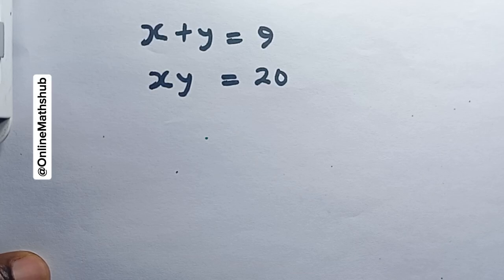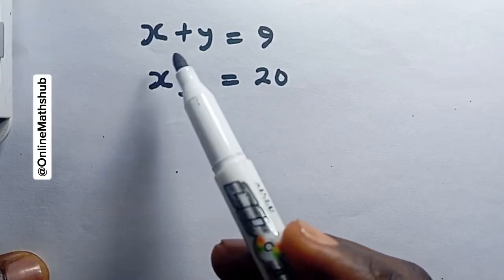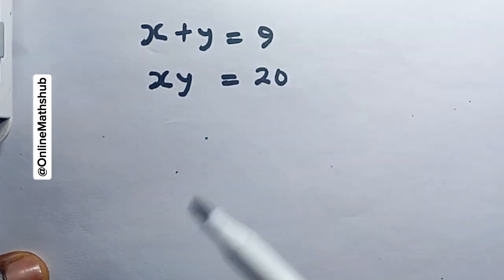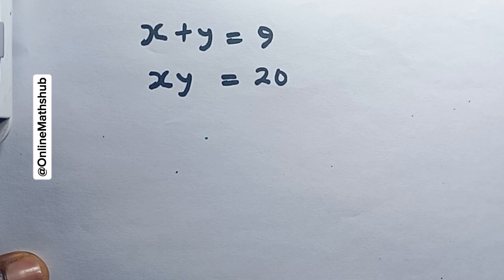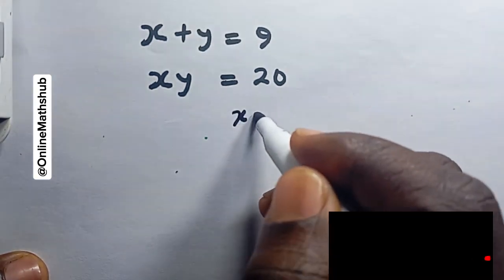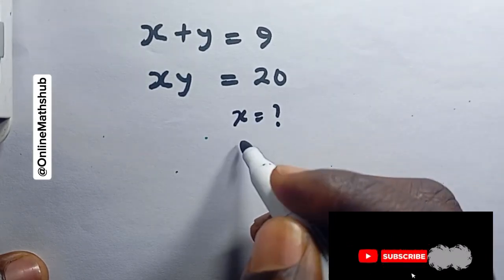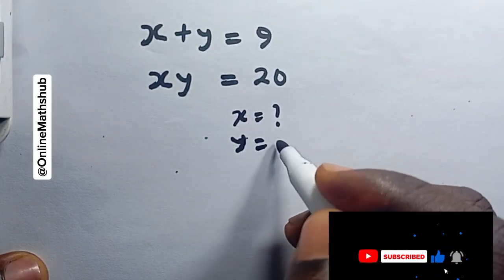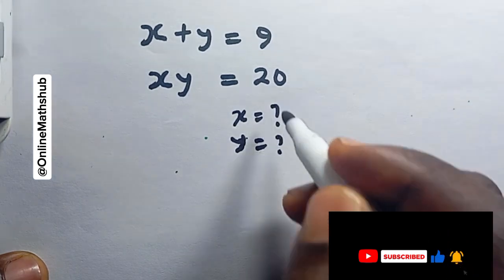Hello friends, welcome back to Online Mashup. We're going to be solving this question: x plus y is equal to 9, and x multiplied by y is equal to 20. We want to find out what values of x and y will satisfy this — the value of x and the value of y.